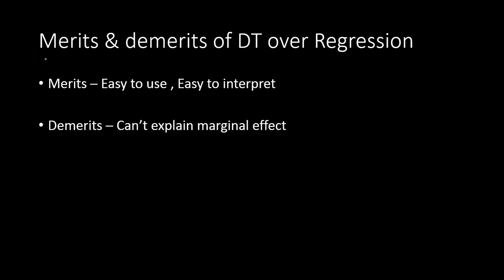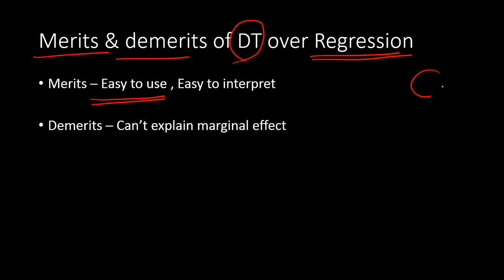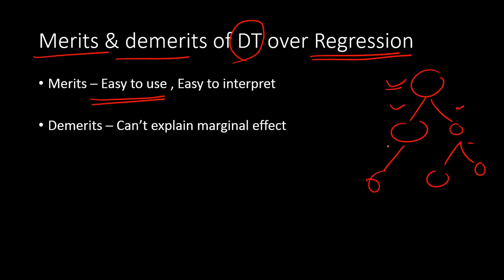Questions related to merits and demerits of decision tree over regression are also common. A key merit of decision tree is that it's easy to use and easy to interpret. You can explain it to a non-technical audience: the first variable is the most important, it divides the data into two segments, and there are further divisions based on certain criteria with cut-off values at each node. It's easy to interpret for non-technical audiences.